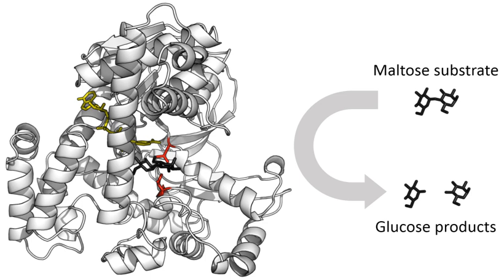Enzymes must bind their substrates before they can catalyze any chemical reaction. Enzymes are usually very specific as to what substrates they bind and then the chemical reaction catalyzed. Specificity is achieved by binding pockets with complementary shape, charge, and hydrophilic/hydrophobic characteristics to the substrates. Enzymes can therefore distinguish between very similar substrate molecules to be chemoselective, regioselective, and stereospecific. Some of the enzymes showing the highest specificity and accuracy are involved in the copying and expression of the genome.